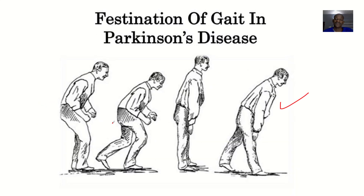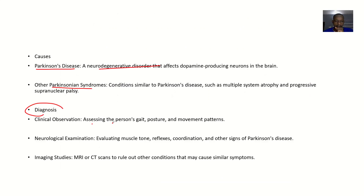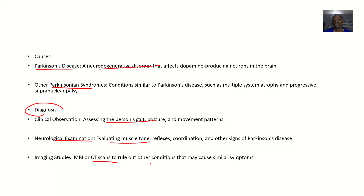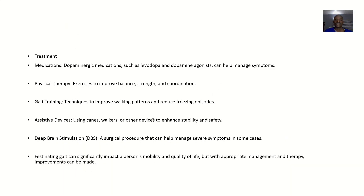For diagnosis: clinical observation — if somebody is having a festinating gait, you observe them. Diagnosis is largely physical examination, where you assess the person's gait, posture, and movement patterns. Neurological examination evaluates muscle tone, reflexes, coordination, and other signs of Parkinson's disease. Imaging studies such as MRI and CT scans can help to rule out other conditions.